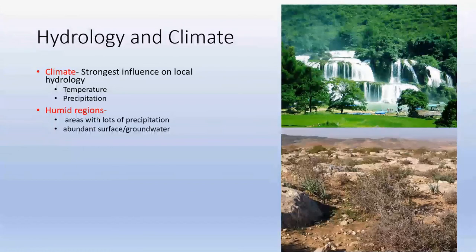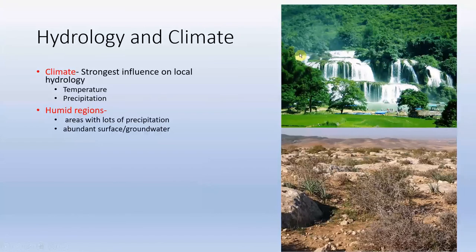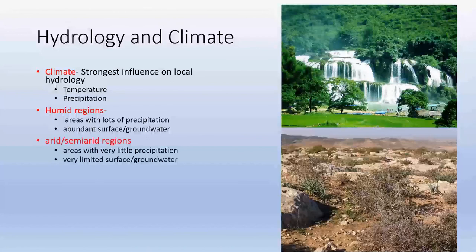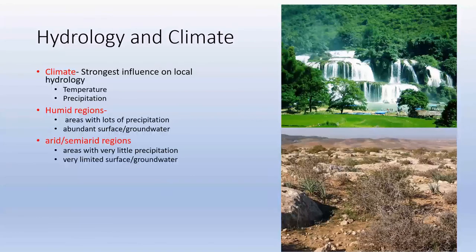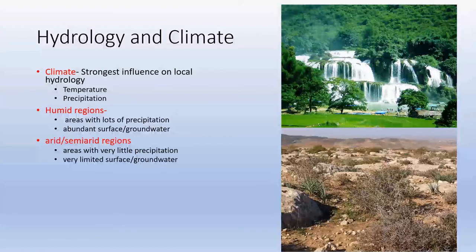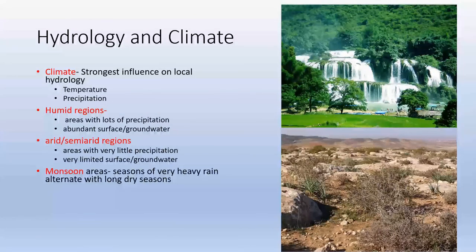A humid region is an area with lots of precipitation, abundant surface water, and abundant groundwater. Even here in Michigan we're considered a humid region — we have lots of surface water and groundwater everywhere around us. In contrast, an arid or semi-arid region like a desert has very little precipitation and very limited surface and groundwater. In Michigan you don't have to dig your well too deep, but out west you may need to go a thousand feet or more before reaching an aquifer.